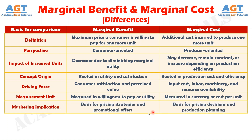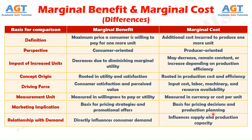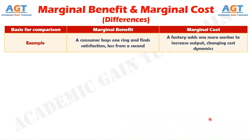Number seven: businesses use marginal benefit to design pricing strategies and promotional offers, whereas they rely on marginal cost for production decisions and pricing analysis. Number eight: marginal benefit directly affects consumer demand, whereas marginal cost affects production capacity and supply.